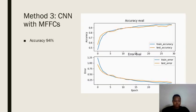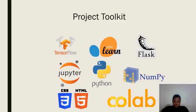For the final method, we used a CNN trained with MFCCs. We achieved an accuracy of 94%, and this is the model that is working on our web application. These are the tools that we used both for creating the models and for creating the web application.